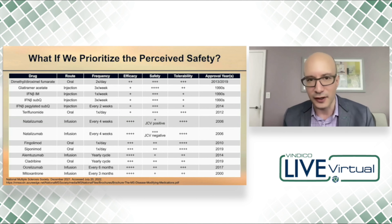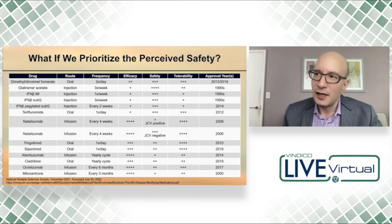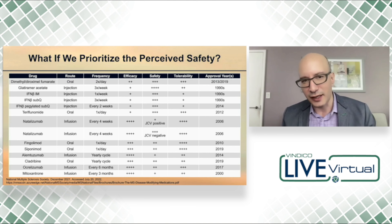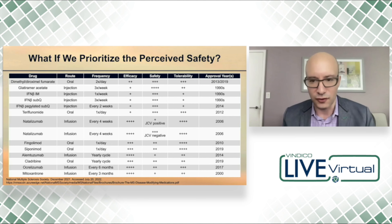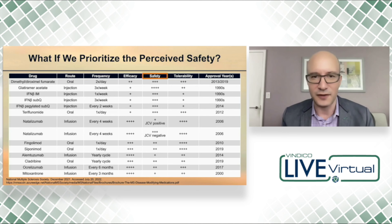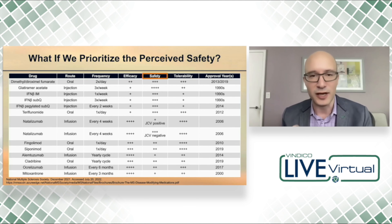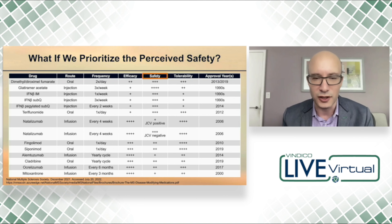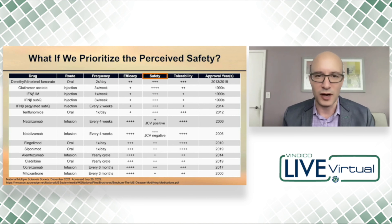Prioritizing efficacy alone is not how we make our decisions — we co-balance that with thinking about safety and the perception of safety. Safety is a big category. There are adverse events that pose safety concerns, and there are side effects, which are more tolerability concerns. If we're worried about safety for a given patient — perhaps she has more comorbidities like diabetes and hypertension, existing liver disease, or is older and has accumulated more comorbidities — we might prioritize safer medicines so we don't aggravate comorbidities.